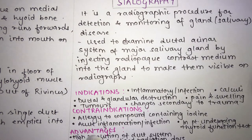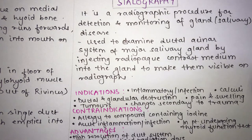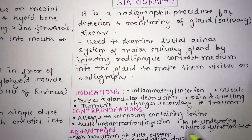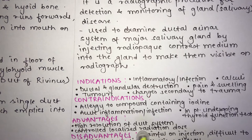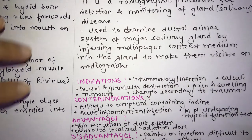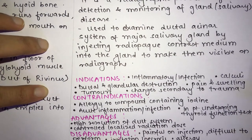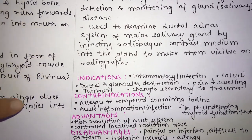Contraindications for sialography include allergy to iodine-containing compounds, acute inflammatory or infectious conditions, and patients undergoing thyroid function tests. Advantages include high resolution of the duct system and controlled localized radiation dose. Disadvantages include pain on injection, difficulty of performance, risk of necrosis or irritation, and potential allergic reactions.